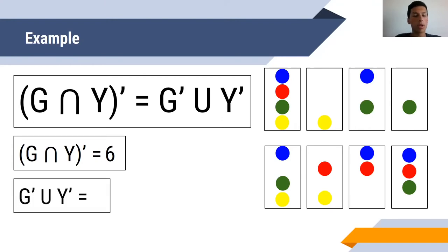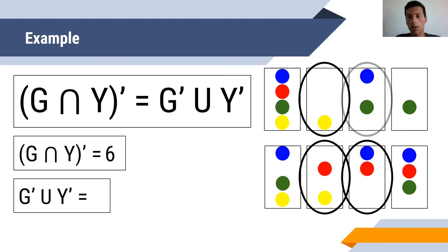Now let's look at green prime union yellow prime. So we're going to look at all the cards first that don't have green. So that's one, two, three. And then since it's union, we're going to add the cards that don't have yellow to those three. So that's one, two, three. So the answer here is six.